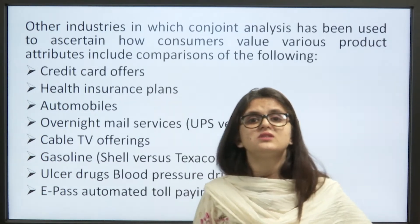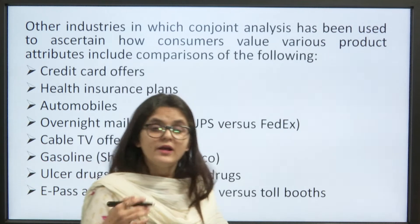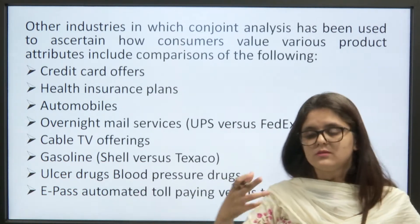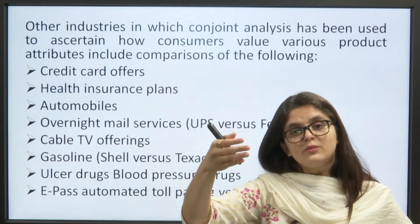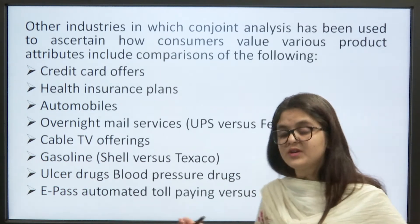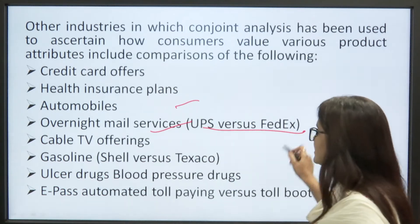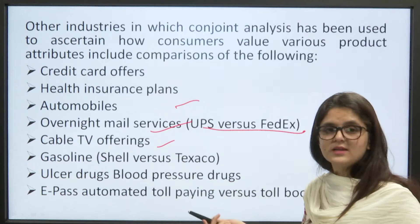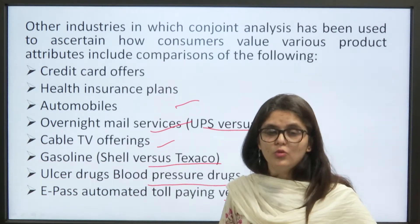Other industries where conjoint analysis has been used to ascertain how consumers value various products and attributes include: credit card offers, health insurance plans — understanding what benefits individuals can access and at what interest rates — automobiles, overnight mail service such as UPS versus FedEx, cable TV offerings like Dish TV or Tata Sky, gasoline brands such as Shell versus Texaco, ulcer and blood pressure drugs, and e-pass automated toll paying versus toll booths.